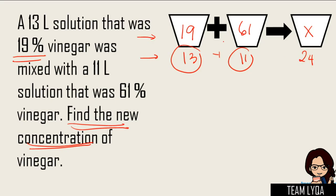Now, ngayong kompleto na siya, ibababa mo na siya, i-multiply mo ang bawat isa sa, kung ano yung nasa tapat niya. So, 19 times 13 plus 61 times 11 is equal to 24x. That's what we're going to do.